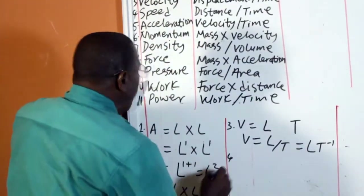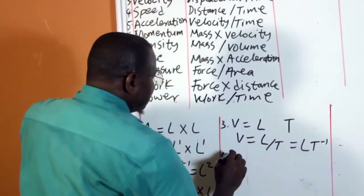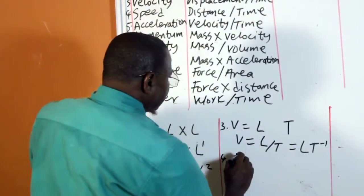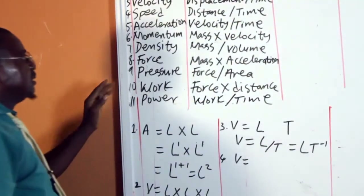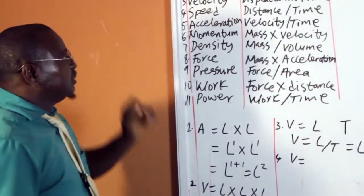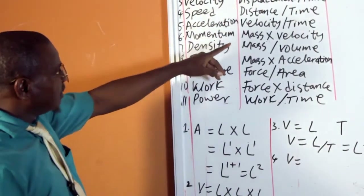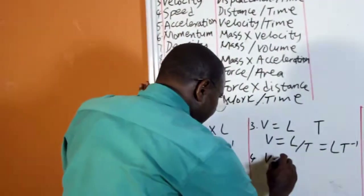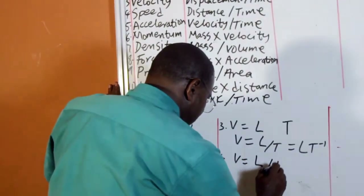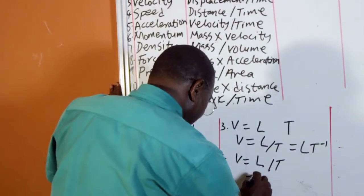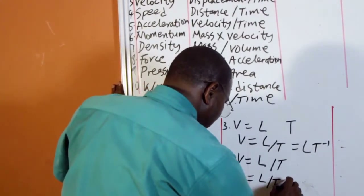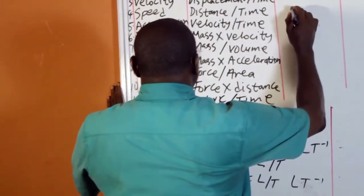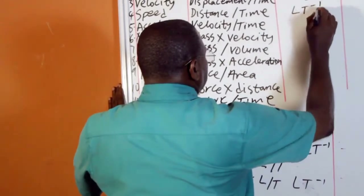Number 4 is speed. Speed is distance over time. The distance is represented by L and the time is represented by T. So this gives us L over T, or LT raised to power minus 1. Speed is also LT raised to power minus 1.